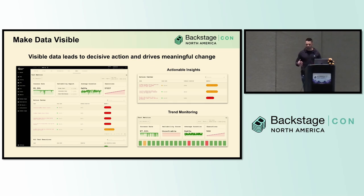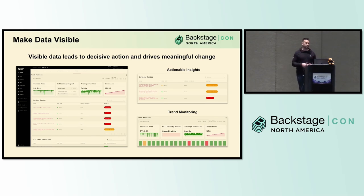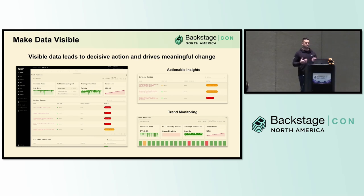Another underlying theme: when data is made visible, it is really a catalyst for change. We saw this when we ran into issues with test reliability — as our test automation grew, we were seeing more intermittent failures and a lot of frustration. When we made those metrics visible across everybody, it really created action and momentum towards everybody contributing to improving them. We were able to see a lot of success just by providing insights into this data and making it visible.